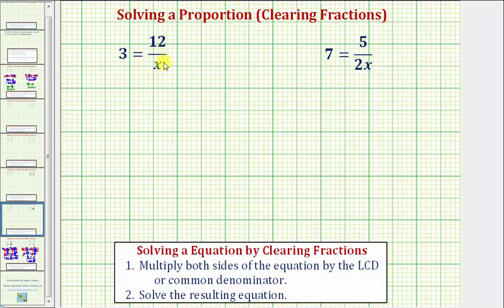Going back up to our two examples, because we only have one denominator here of x, x is the least common denominator. So we're going to multiply both sides of the equation by x to clear the fraction. So we're given three equals 12 over x, and again we're going to multiply both sides of the equation by x. On the right side here, because we have a fraction, we'll write x as x over one.